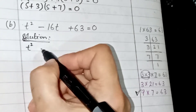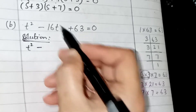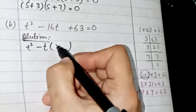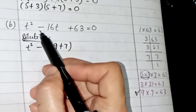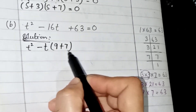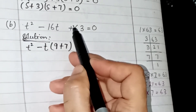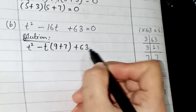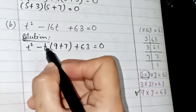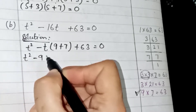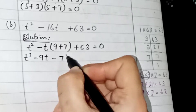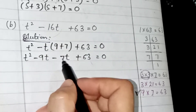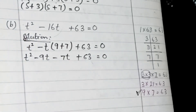Write the first term, then take minus t outside the bracket with the two factors added inside: 9 plus 7. We take minus t outside because the last term gives the hint of addition. Multiplying minus t with the bracket gives t squared minus 9t minus 7t plus 63. Checking: minus 9t minus 7t gives minus 16t, which matches the original equation — so we are splitting it correctly.